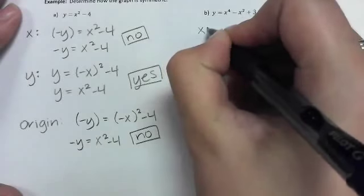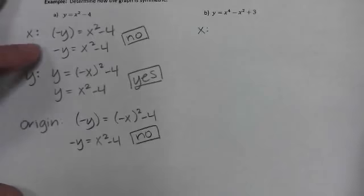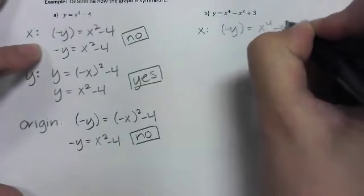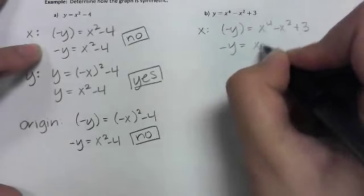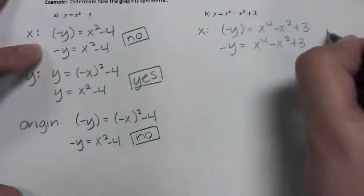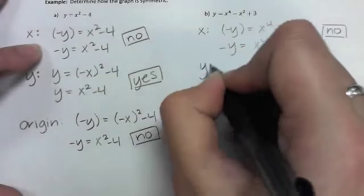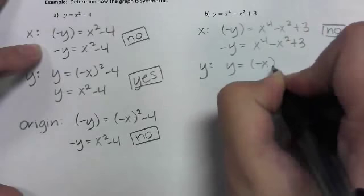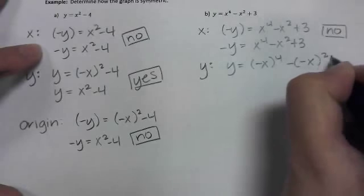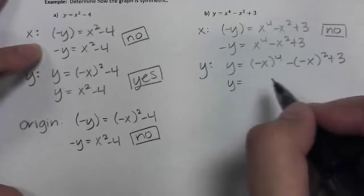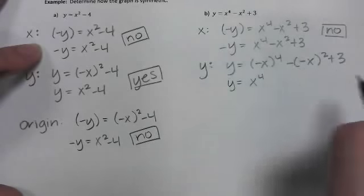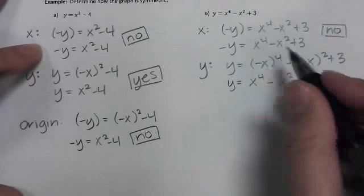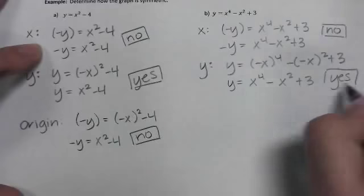We'll do the same for the second example. Checking x-axis symmetry — replacing y with negative y — doesn't change the right side meaningfully, so that's no. Checking y-axis symmetry: replacing x with negative x, negative x multiplied by itself four times gives x to the fourth; minus negative x squared becomes plus x squared, plus three. That's exactly the same as the original, so yes — symmetric to the y-axis.